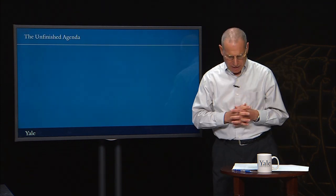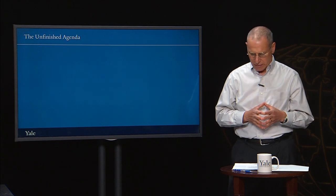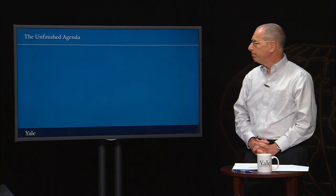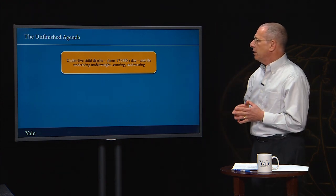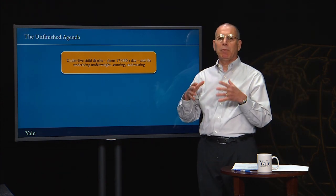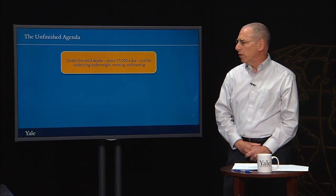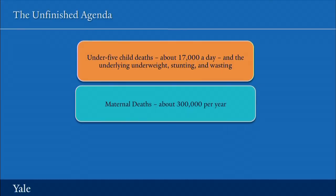Despite enormous progress, the unfinished agenda remains a large one. There will continue to be an unacceptably large number of child deaths in the world. More than six million children die in the world each year, and this is about 17,000 under-five child deaths a day. An important share of those relate to the underlying nutritional circumstances of those children, many of whom suffer from underweight, stunting, and wasting.